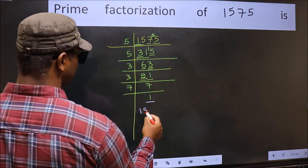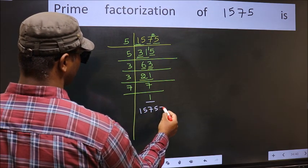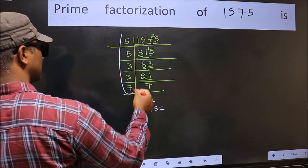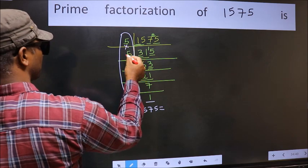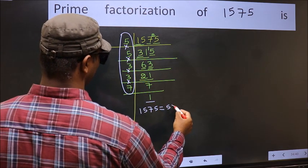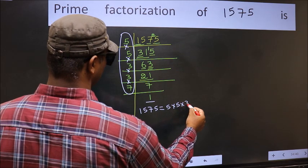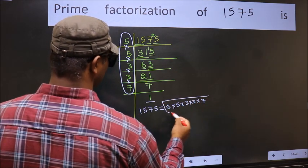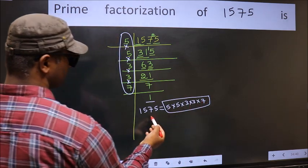So, the prime factorization of 1575 is the product of these numbers. That is 5 into 5 into 3 into 3 into 7. This is the prime factorization of 1575.